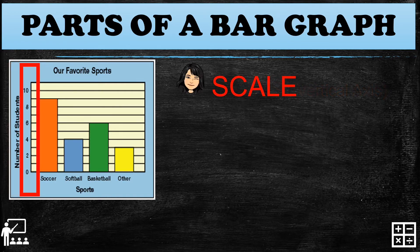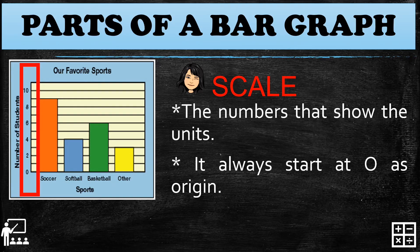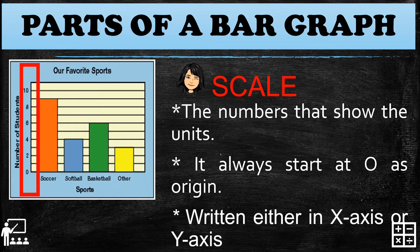The scale is the number that shows the unit — in the tally chart, it represents the tally marks or the total tally marks, which is the frequency. The scale always starts at zero as the origin. It can be written on either the x-axis or y-axis, depending on your kind of bar graph.